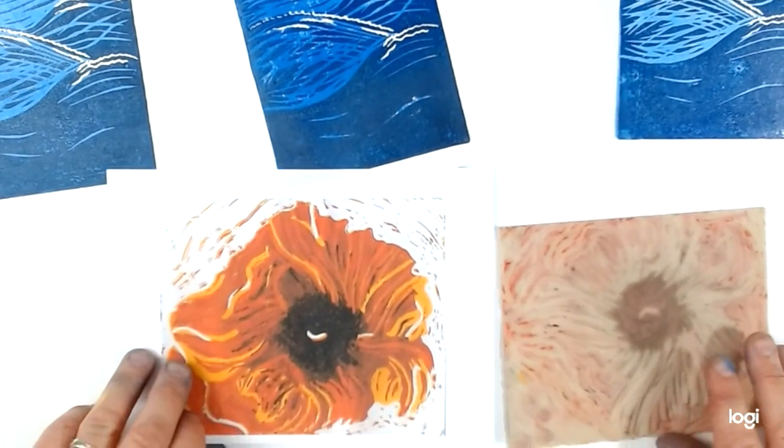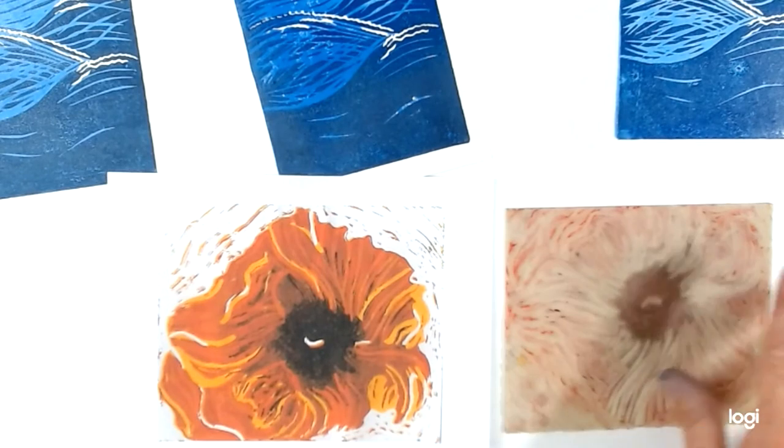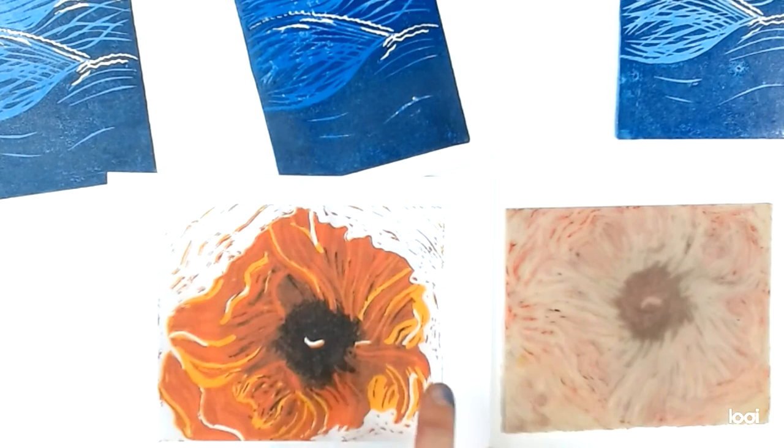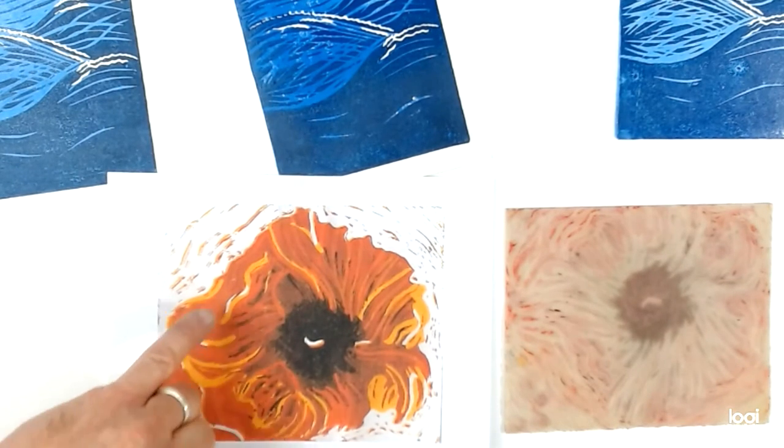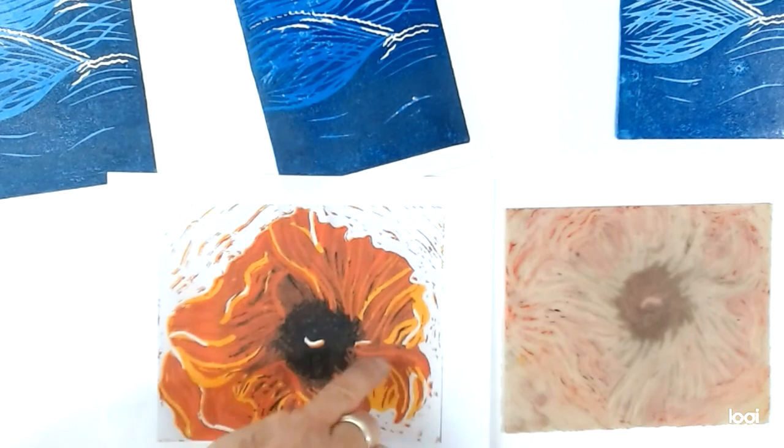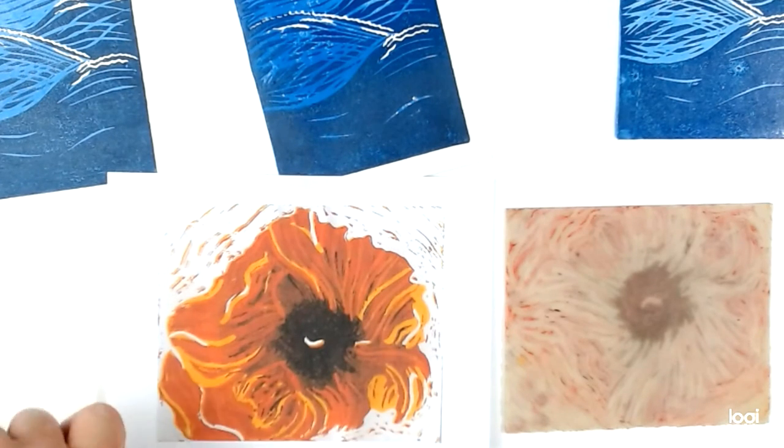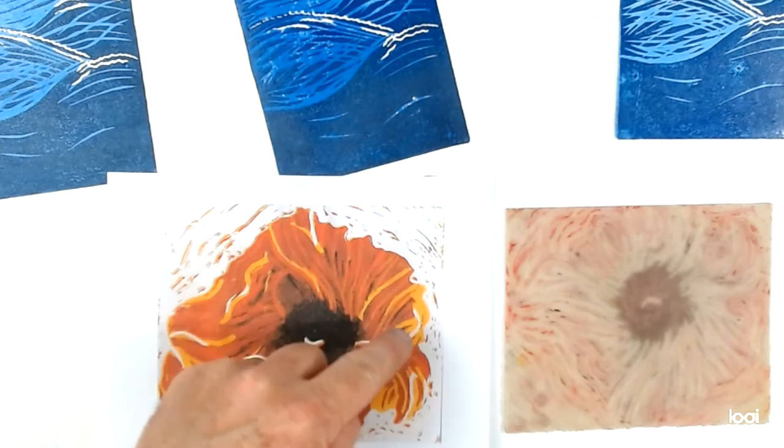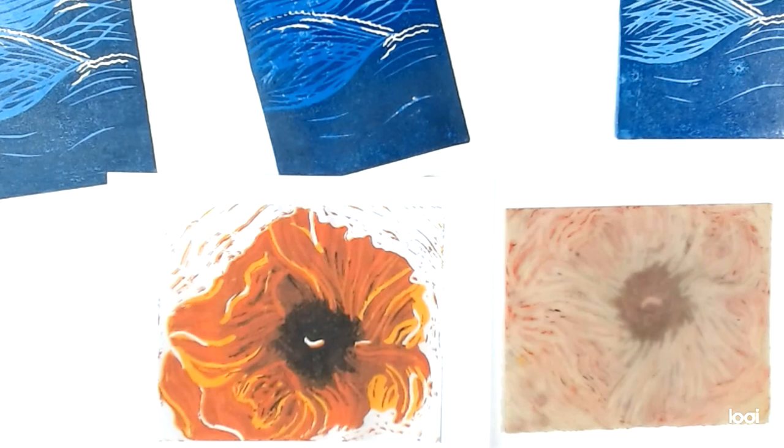So here is the lino, you can see virtually everything has been cut away, and here is the print. Now apart from the initial planning with the white and leaving that center piece to print the plaque, pretty much it's been cut in a more instinctual way, just trying each time to create more and more featheriness within this flower. What we are going to look at now though is a more careful planning for something which has got much more definition.